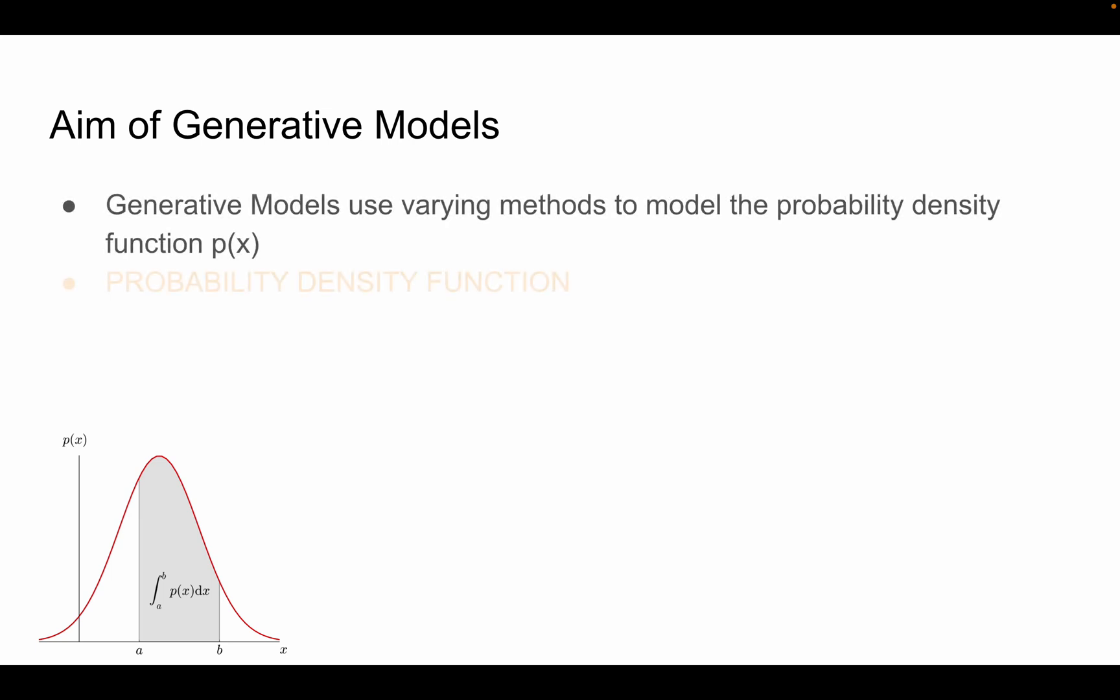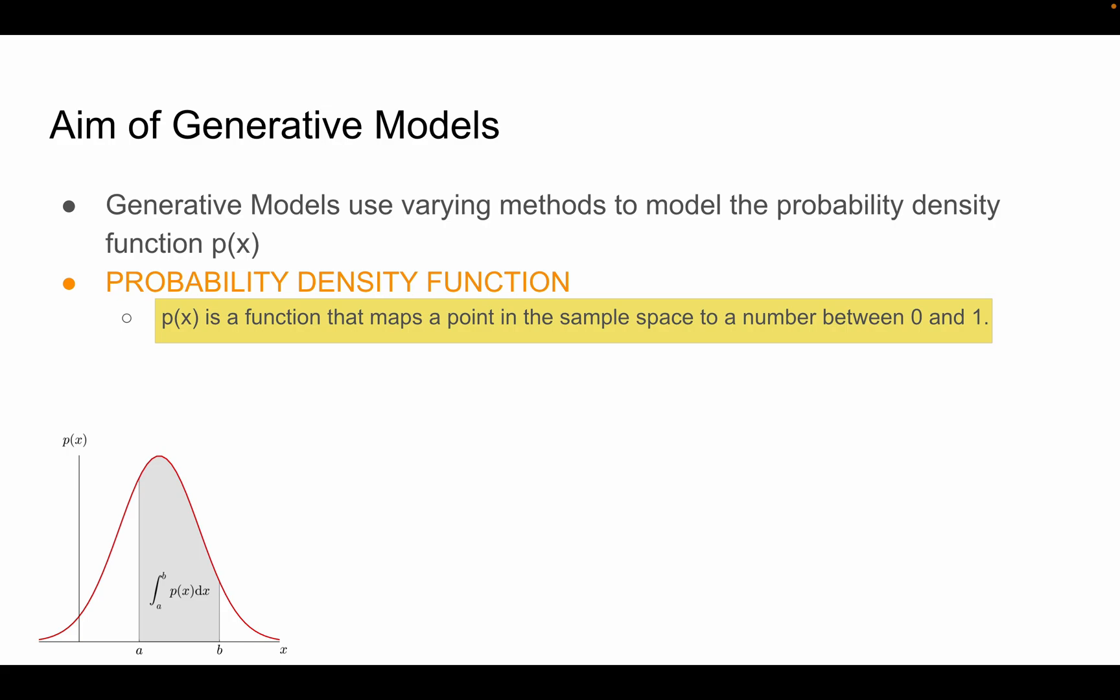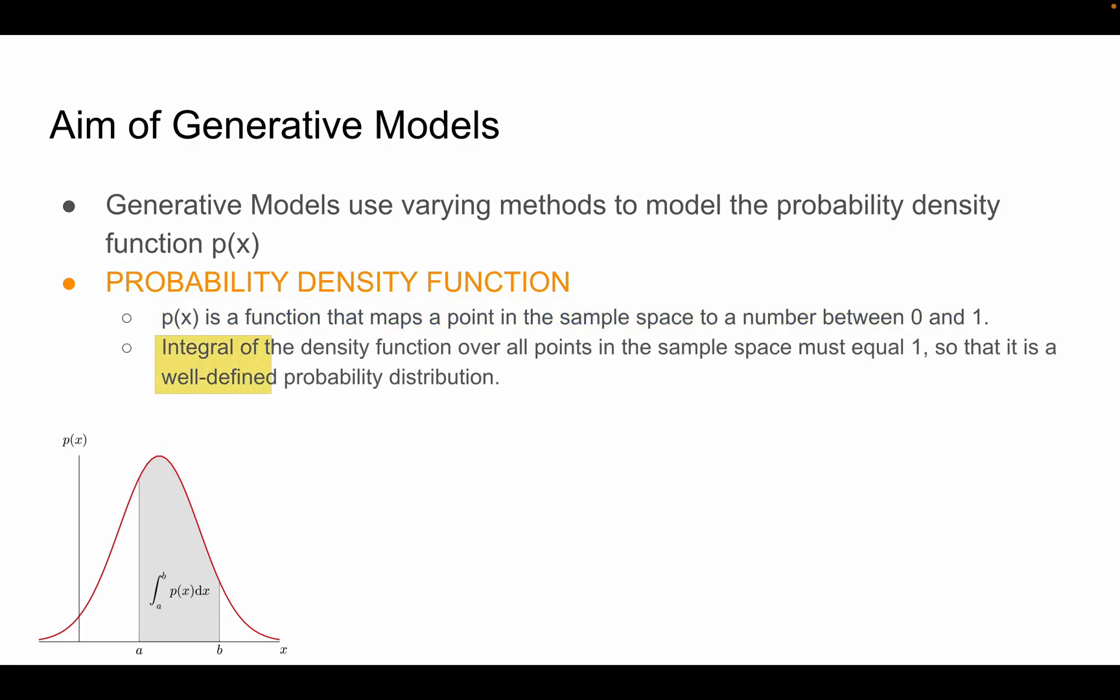Talking about this probability density function, this is a function that maps a point in sample space to a number between 0 and 1. The integral of the probability density function over all points in sample space must equal 1 so that this is a well-defined probability distribution.